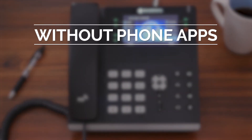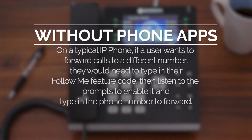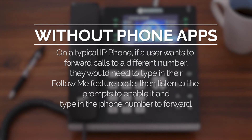On a typical IP phone, if a user wants to forward calls to a different number while they are away from their desk, they would need to type in their Follow Me feature code, then listen to the prompts to enable it, and then type in the phone number to forward to. A similar process is required to disable the feature.